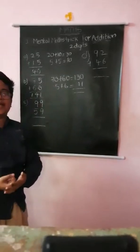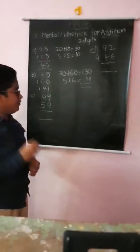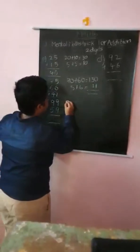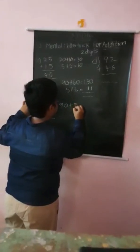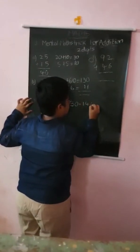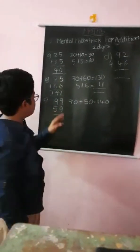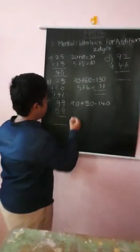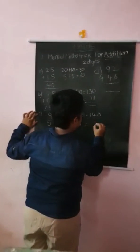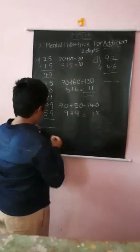Third problem: 99 plus 59. In the tens place, the number is 9 and downwards the number is 5. Then 90 plus 50 is 140. Again in the ones place, the number is 9 and downwards the number is 9. 9 plus 9 is 18. The answer is 140 plus 18 is 158.